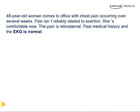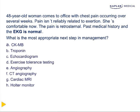Sample question: a 48-year-old woman comes to the office with chest pain occurring over the last several weeks. The pain is not reliably related to exertion. She's comfortable now. The pain is retrosternal. Past medical history and the EKG are normal. What is the most appropriate next step? Ischemic pain is retrosternal; non-ischemic pain is typically left-sided. Because she's in the office and doesn't have pain now, enzymes such as CK-MB and troponin are not appropriate.